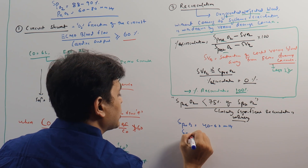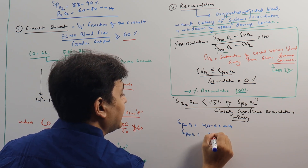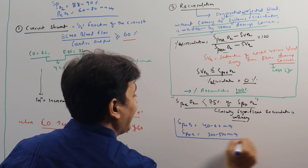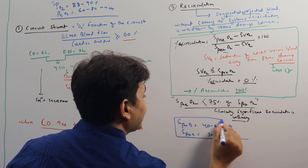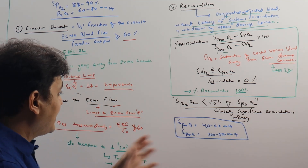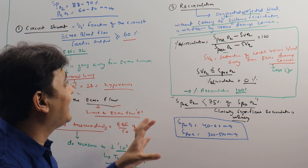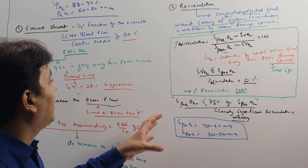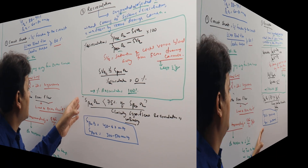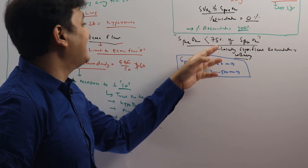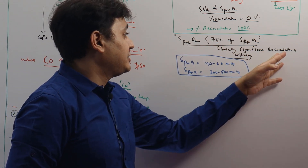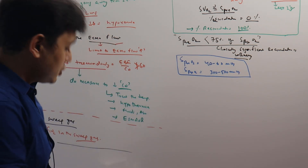When the difference between pre- and post-oxygenator values is very high, recirculation is unlikely. When these values approximate each other — closing that gap — clinically significant recirculation is present. Ideally, the pre-oxygenator saturation (SprO2) should be less than 75 percent of the post-oxygenator saturation. If it is more than that, there is recirculation.